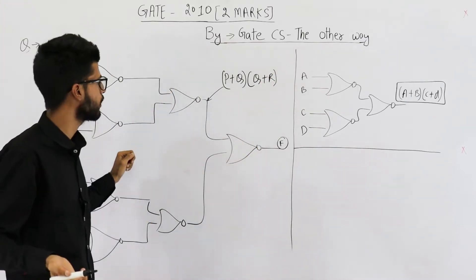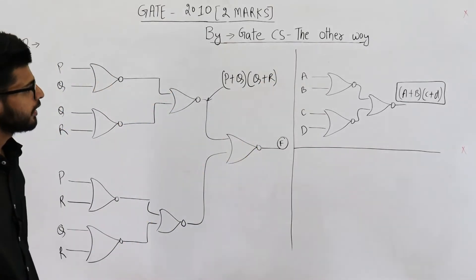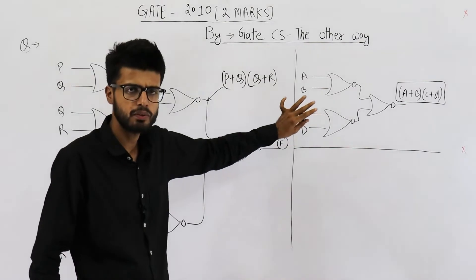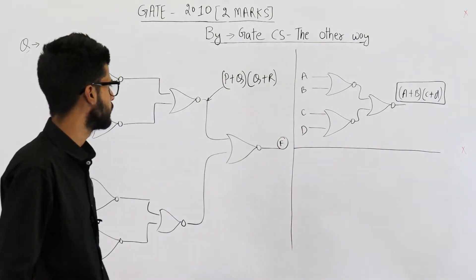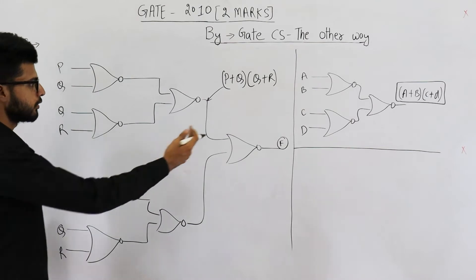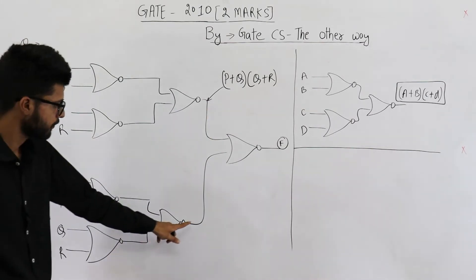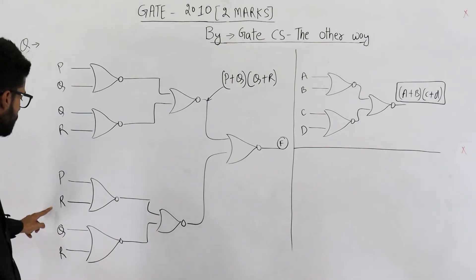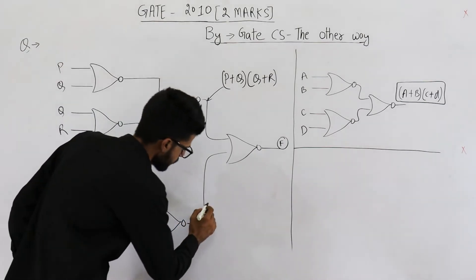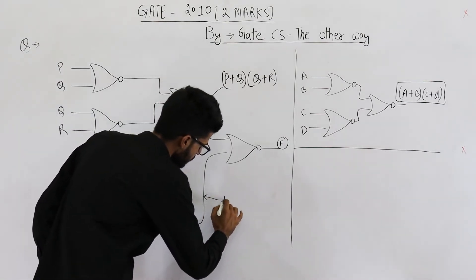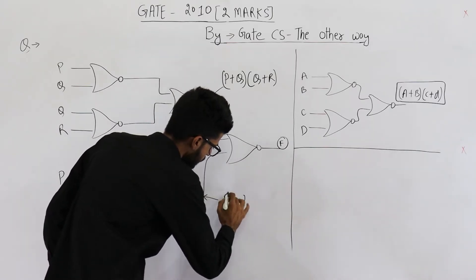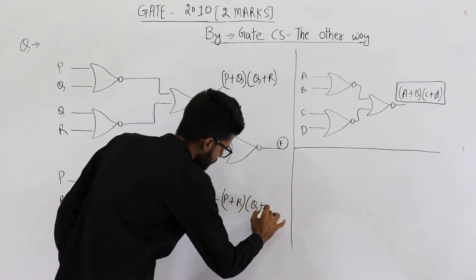If you still have some doubt, you can just analyze it. Anyways, it's a well-known fact, you need to memorize the structure. So similarly, here also, you just find that analogy and you can find output of this gate. It will be P plus R into Q plus R.